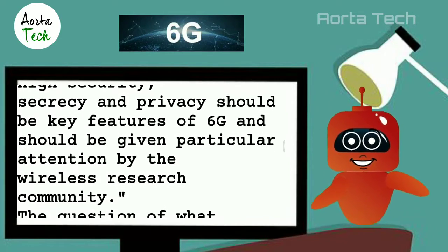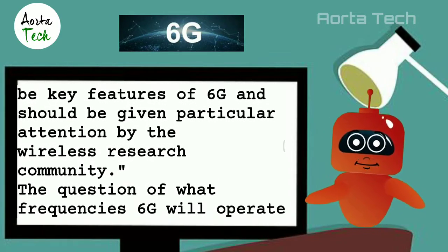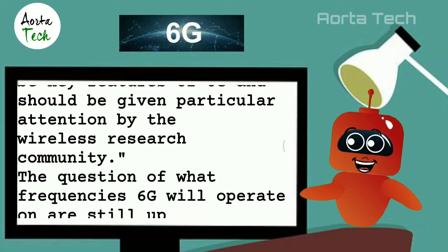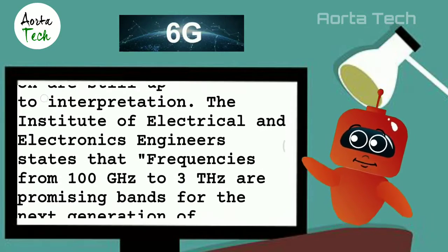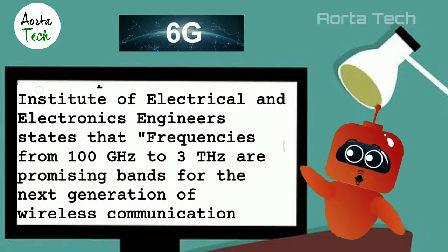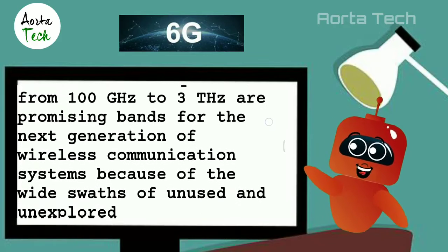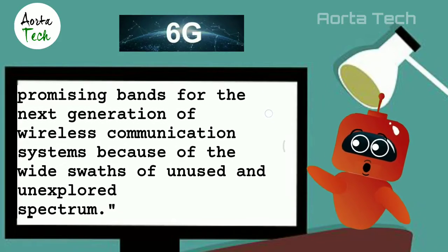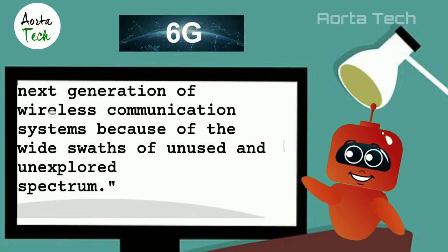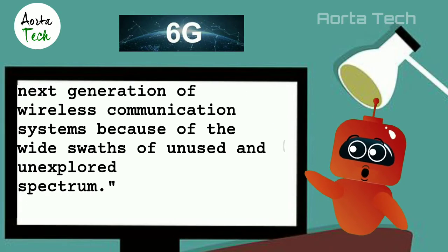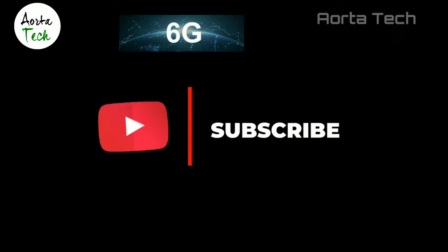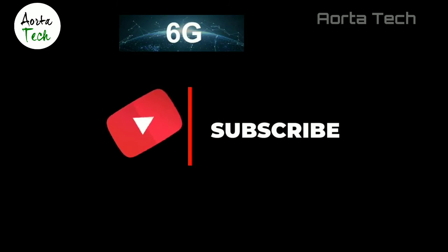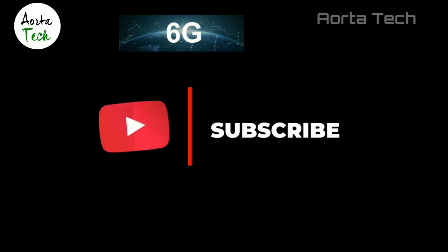The question of what frequencies 6G will operate on is still open. The Institute of Electrical and Electronics Engineers states that frequencies from 100 gigahertz to 3 terahertz are promising bands for the next generation of wireless communication systems, because of the wide swaths of unused and unexplored spectrum. That's all about 6G networks — thanks for watching.